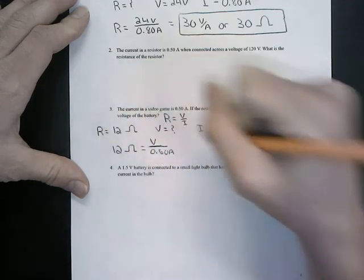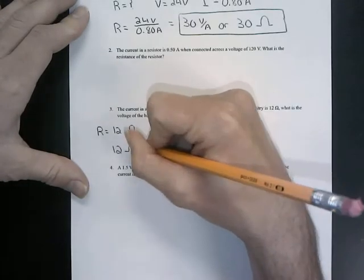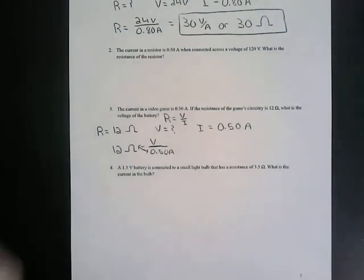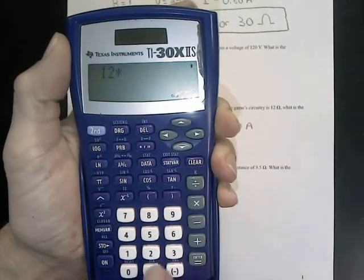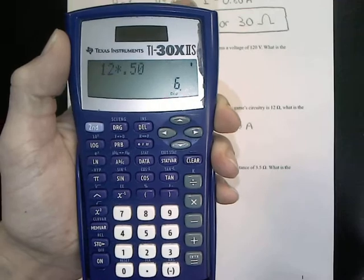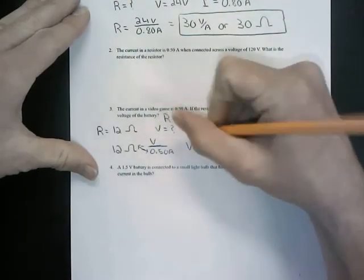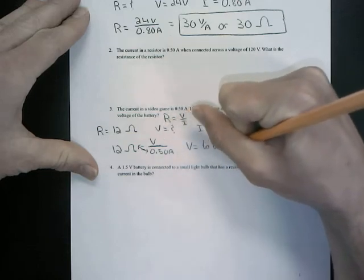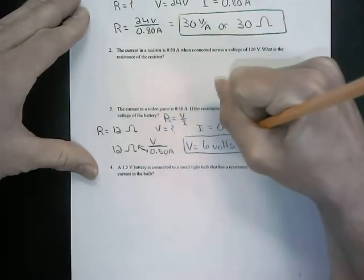Now, what we need to do is we need to cross multiply. So we're going to cross multiply 12 times 0.50. So in my calculator, I'm going to take 12 times 0.50. Press enter. We get a voltage of 6. So our V for volts becomes 6 volts. Or if you just want to put V for volts, that is completely fine as well.